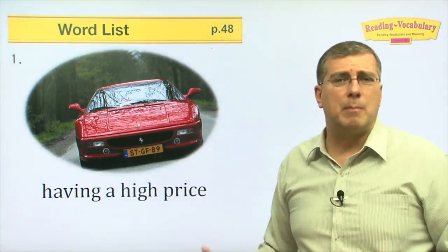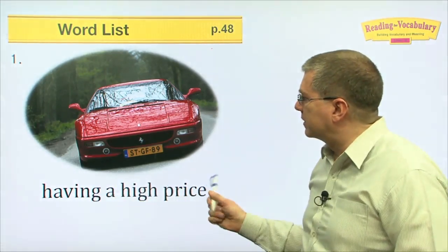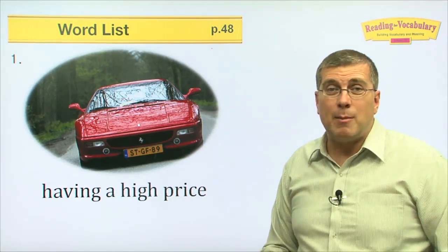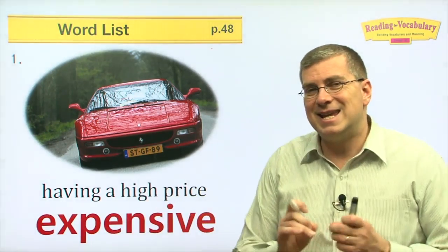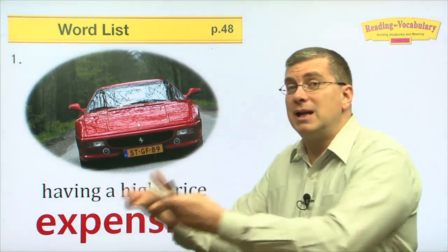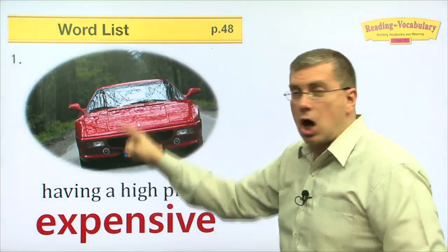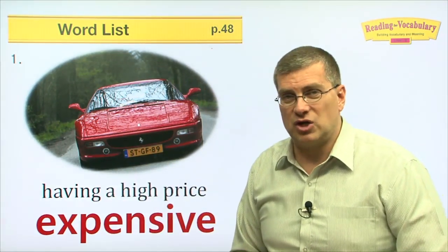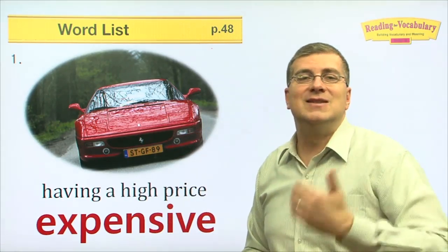Let's learn some words we need to know for the reading passage about Mount Rushmore. First: having a high price. Look at this car — that car costs a lot of money. We can say it is expensive. It takes a lot of money to buy this car. Cars can be expensive. Buildings can be expensive. Construction projects — if you're building something, that can be expensive too. Expensive means it needs a lot of money.